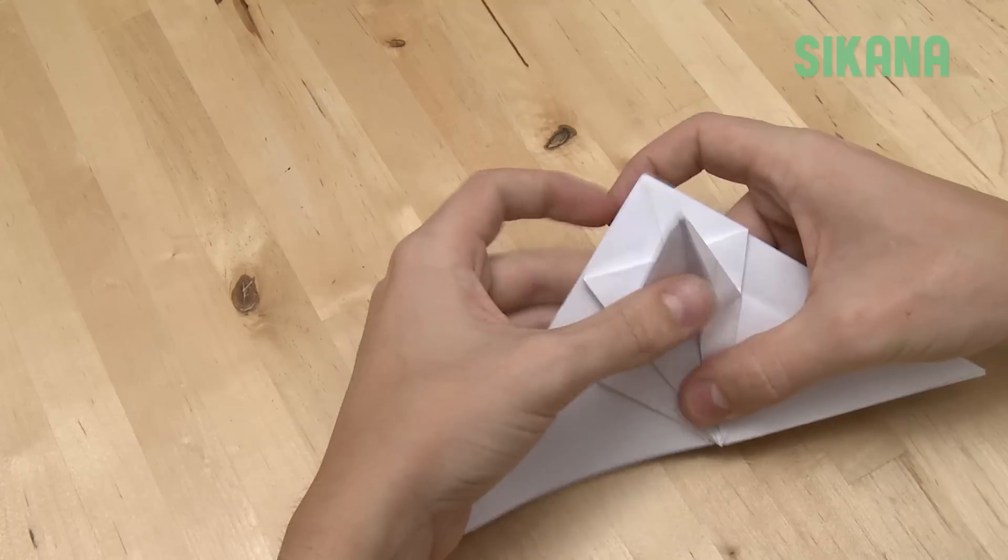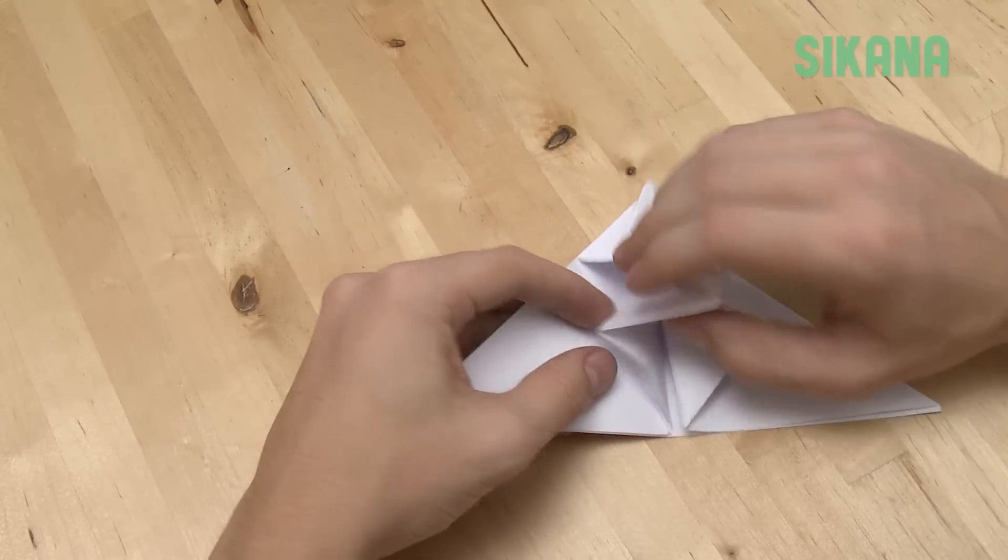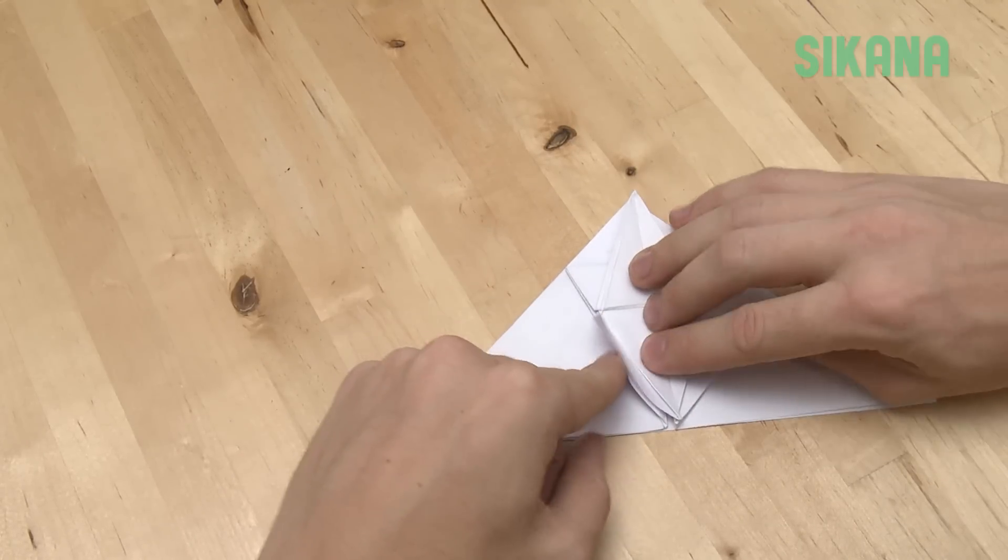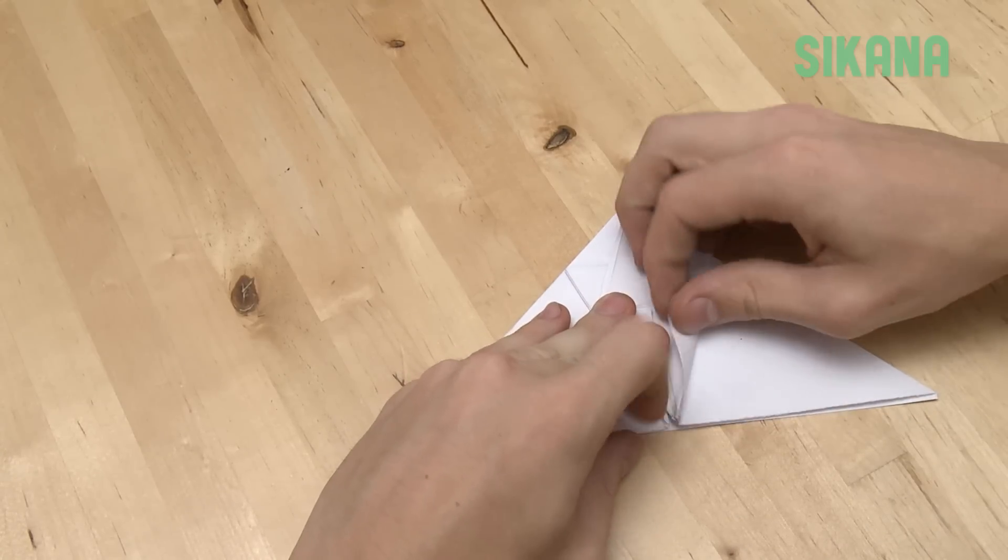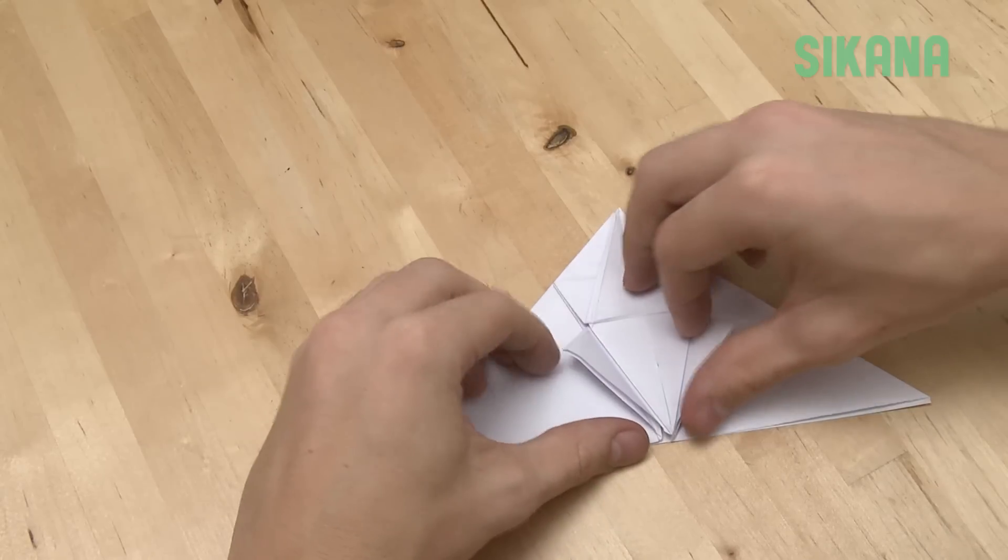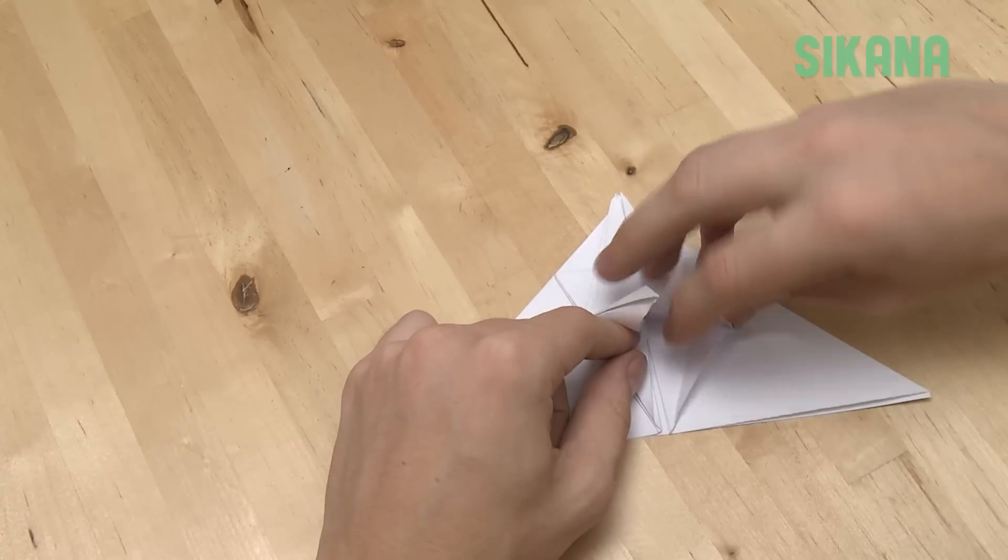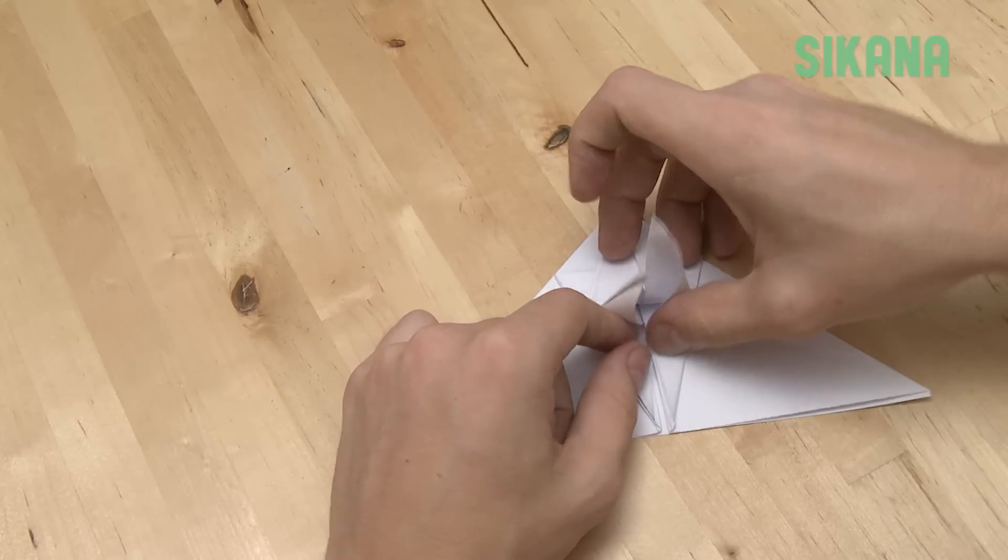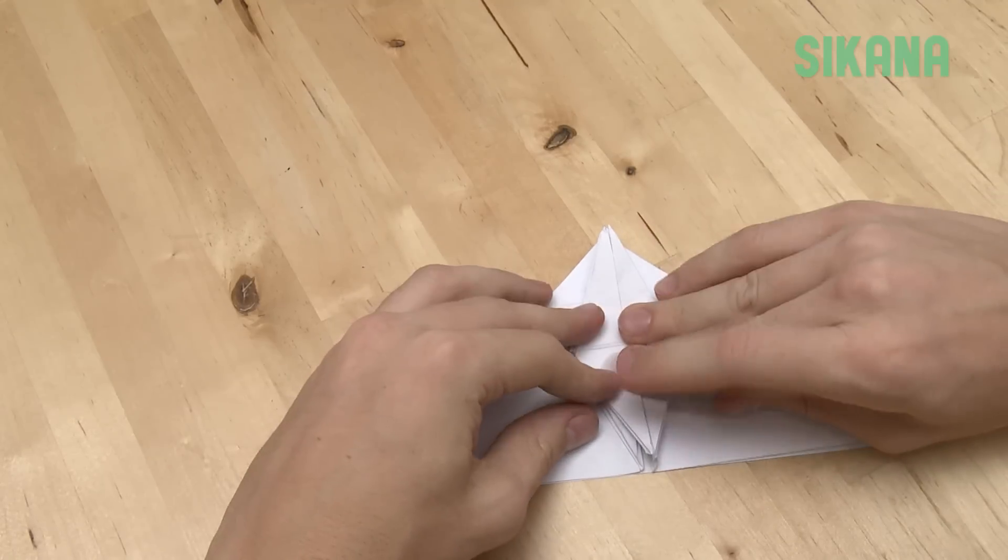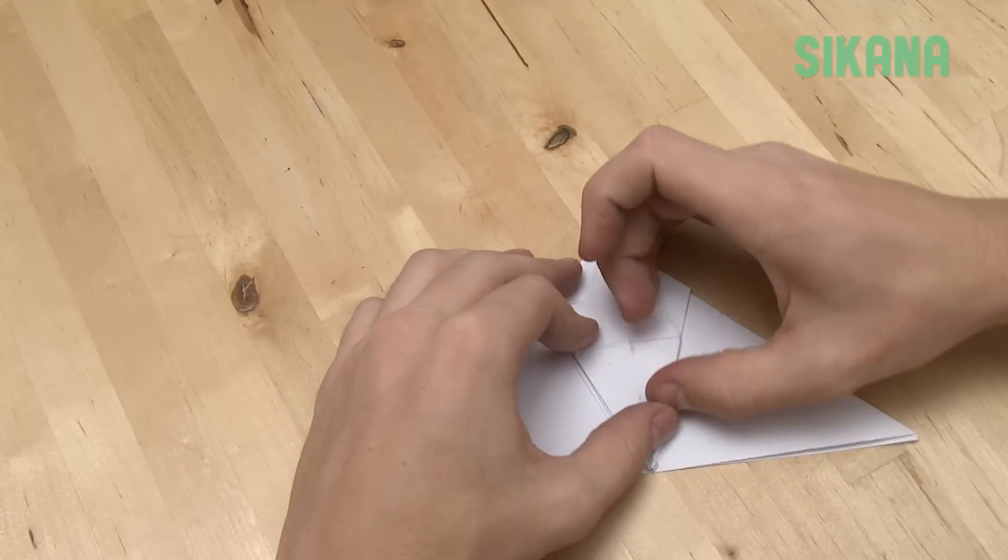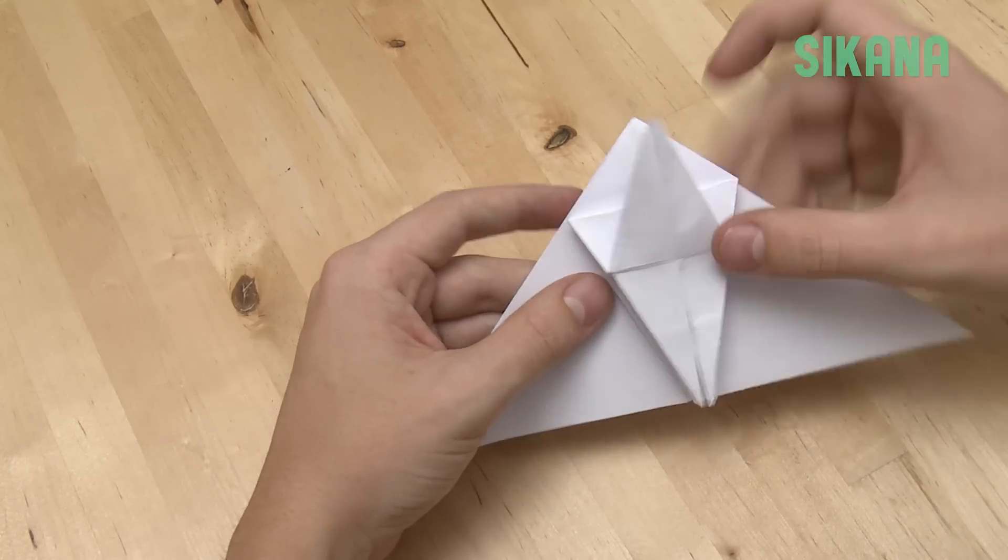By lifting this part, you should have this shape. Repeat for the lower pocket. Fold once to make the creases properly. Then fold it inward, like this. Now that you have this shape, flip the origami.